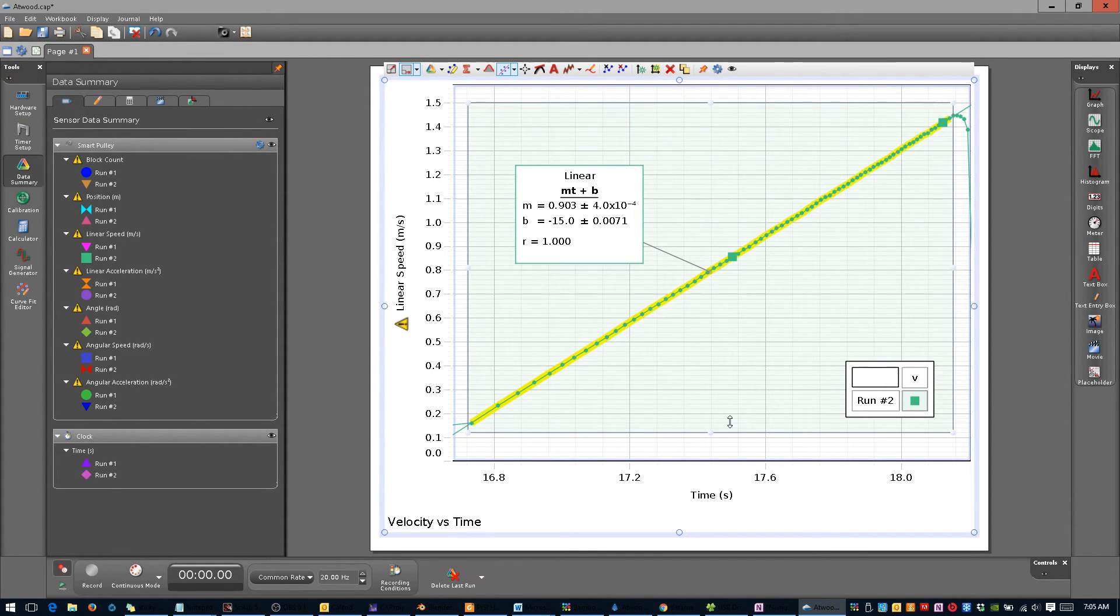This figure looks quite good, except there is an issue with the linear fit. In this case, the slope is reported out to three decimal places, but the error is in the fourth decimal place. To fix this, right-click on the box, then select Curve Fit Properties.